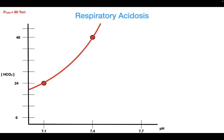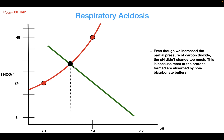In order to find the pH of the solution, you would have to bring in the non-bicarbonate buffers. When you do that, you draw the line and find the intersection — it is at the intersection where you would find the pH of the solution. So the pH in this case would be around 7.2. The increase in CO2 caused a decrease in pH, but the pH did not change too much because most of the protons formed are absorbed by non-bicarbonate buffers, since it's free protons that acidify a solution.